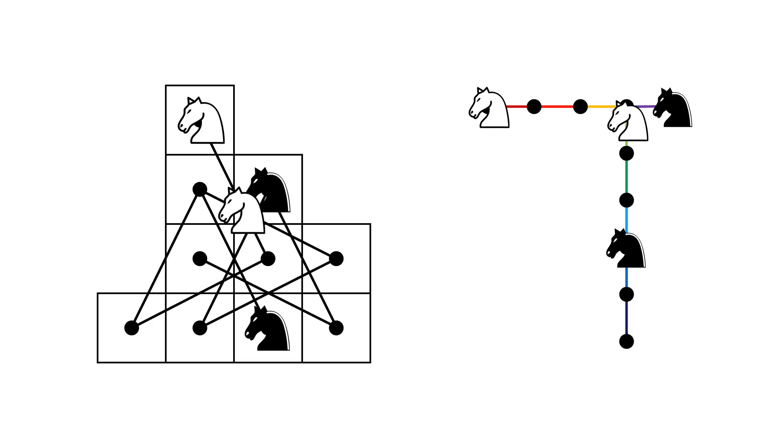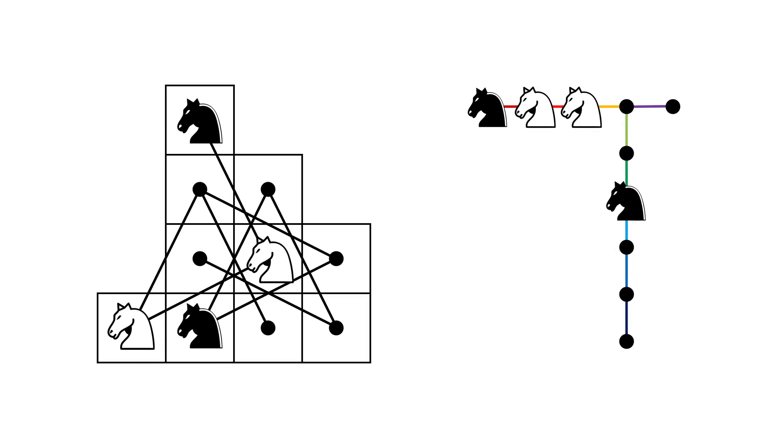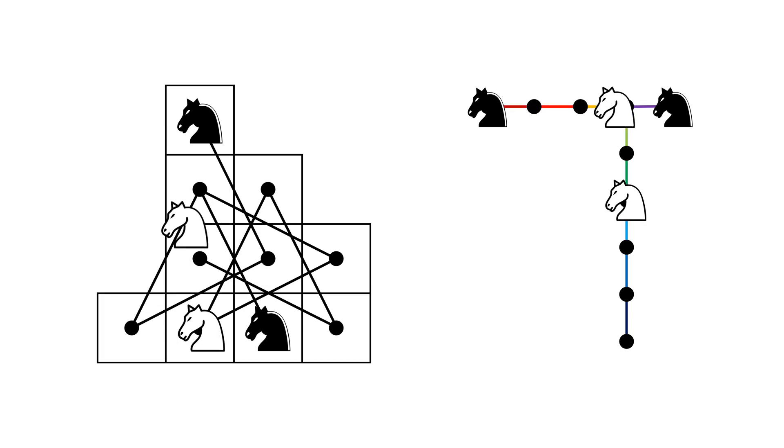You can see that the trick for swapping the knights relies on this individual cell at the intersection of the two longer branches. In other words, we can move one of the knights there, using it as a sort of buffer, thus making way for the remaining knights to move along.